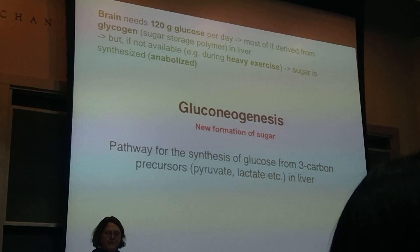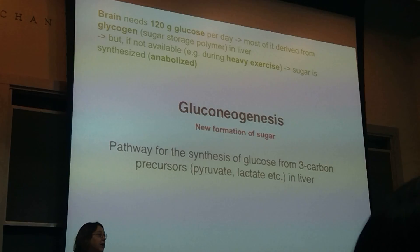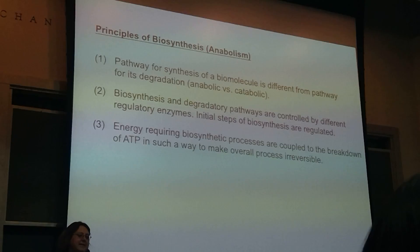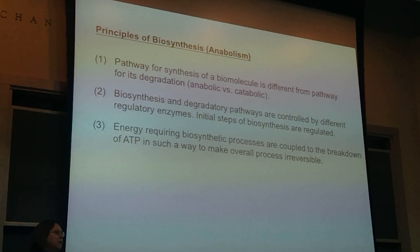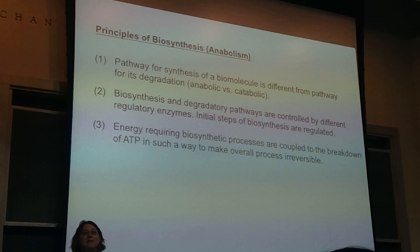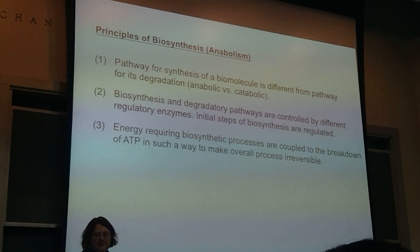Gluconeogenesis is going from three-carbon precursors like pyruvate or lactate to form glucose. The principles of synthesizing something — anabolism: it has to be different from the degradation pathway, they have to be controlled differently, and whenever you have an energy-requiring process, it has to be coupled typically to the breakdown of ATP to make it irreversible. ATP as a way of making something energetically available and irreversible is a strategy we've seen.